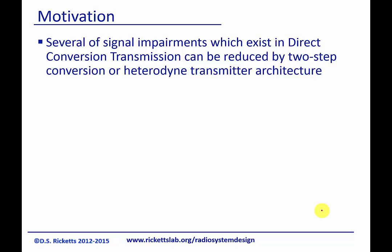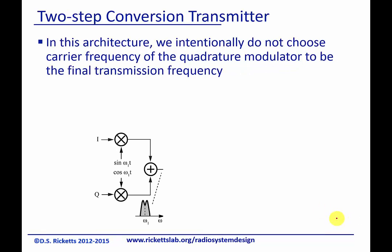Direct conversion is often called homodyne, and heterodyne transmission means that we're going to take two stages of conversion before we get to the final transmitter.